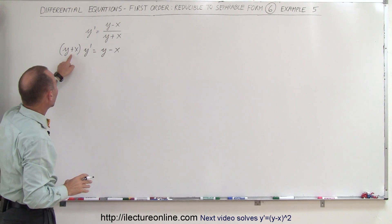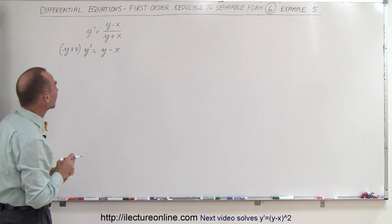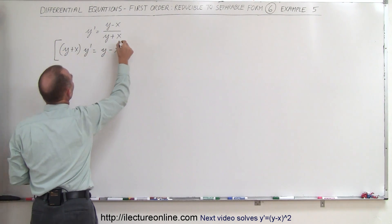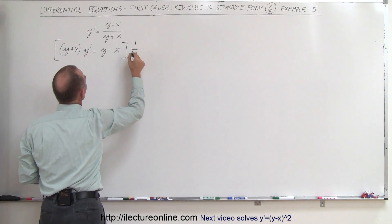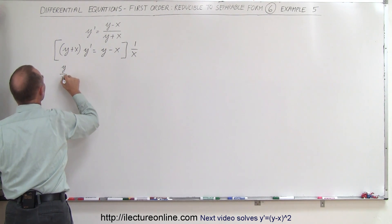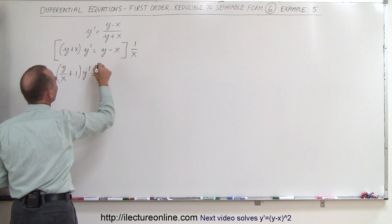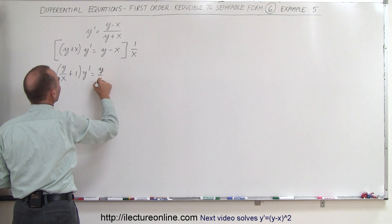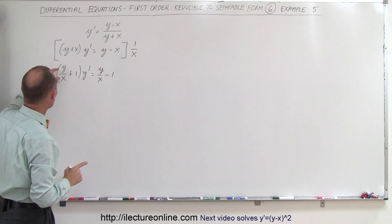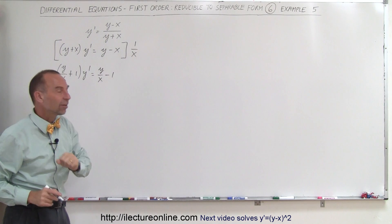Notice that because we have this plus and this minus sign, we have too many terms of y's and x's that makes it hard to separate the variables. What if we multiply both sides of the equation by 1 over x? If we do that, we get y divided by x plus 1, multiplied times y prime, is equal to y divided by x minus 1. Now we have two fractions, y over x — one over here and one over there. So let's go ahead and make that substitution.